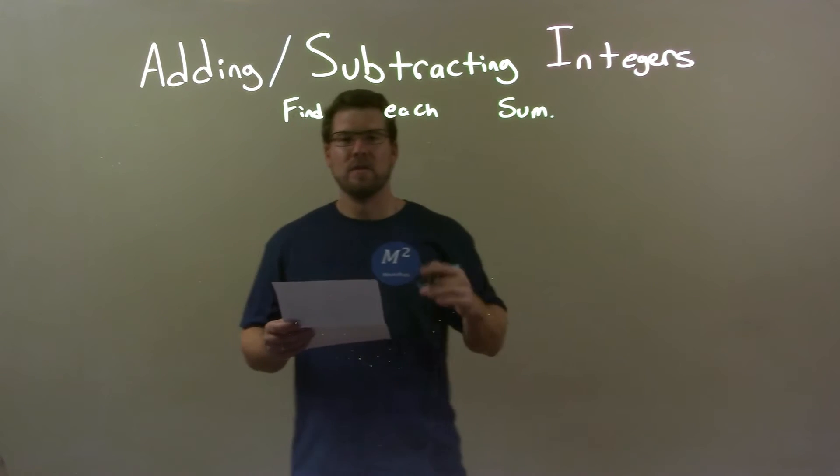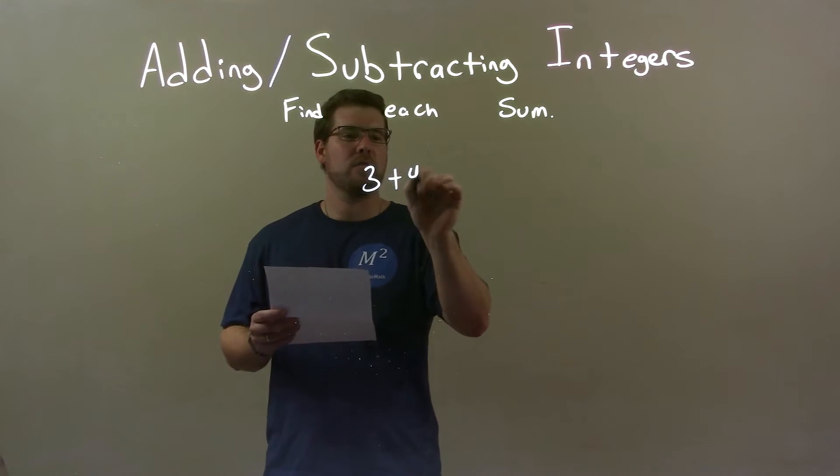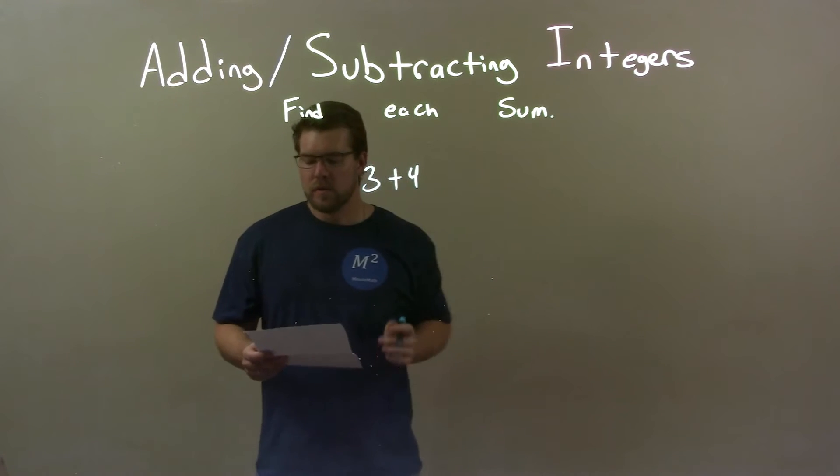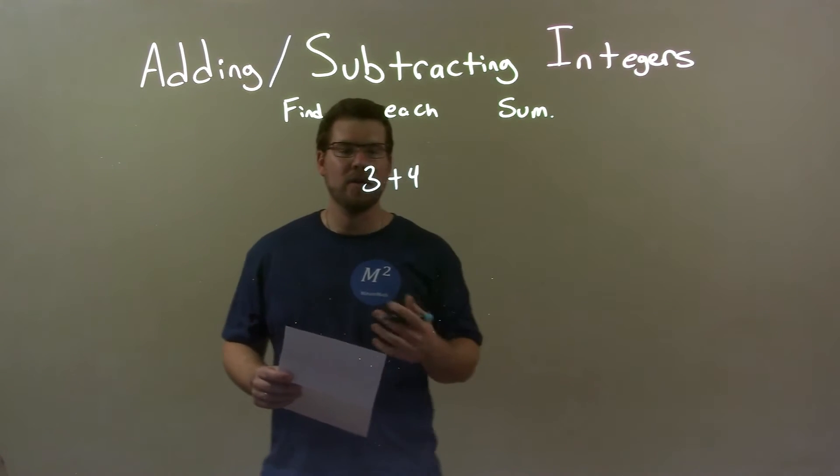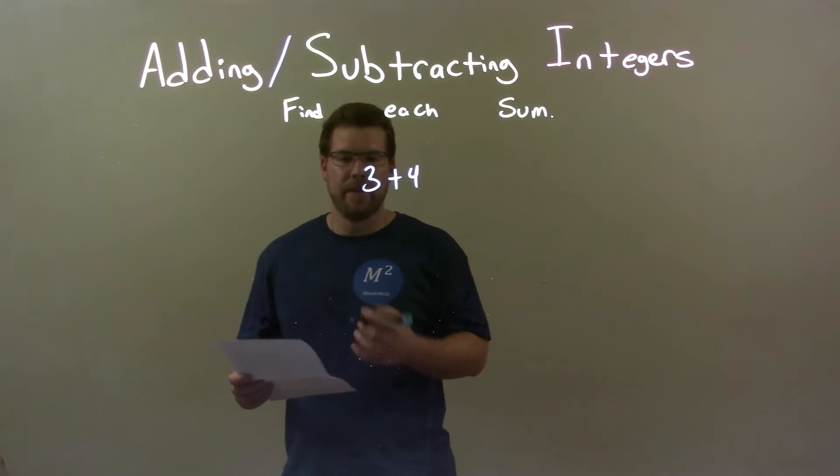So, if I was given these two integers, 3 plus 4—this one's fairly easy, you might know the answer right away, it's 7, right? But how do we get there?